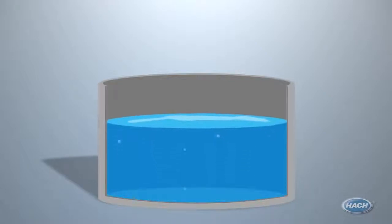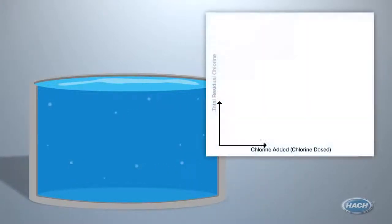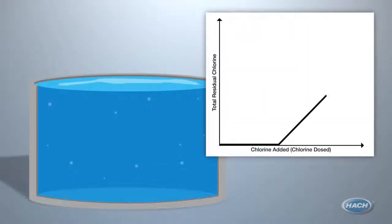To explain this concept, we will use a closed system, a bucket of water without the presence of ammonia. As we add chlorine to the water, it is used up at first as it reacts with the existing matter in the water, for example bacteria, organics, etc.